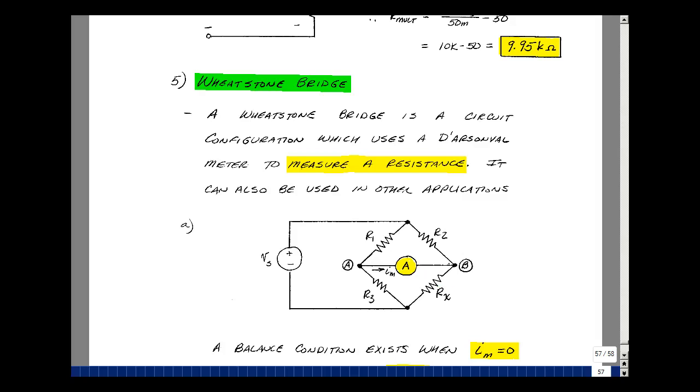The Wheatstone bridge can be used to measure an unknown resistance. This is how you can use a meter to measure current, measure voltage, or measure resistance.